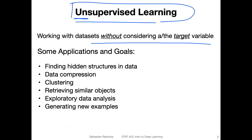There are problems where we simply don't have a target variable, and sometimes we may have one but decide not to use it. There are different types of applications and goals in unsupervised learning. One goal could be finding a hidden structure in the data, or compressing data for storage needs. Also, some machine learning algorithms are very susceptible to the curse of dimensionality, so we can reduce features to improve performance.